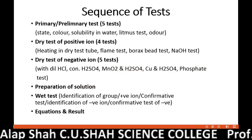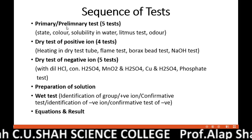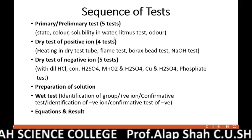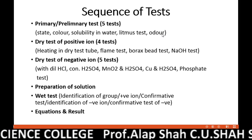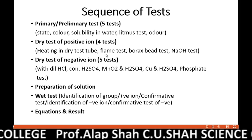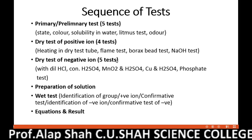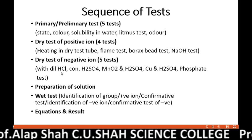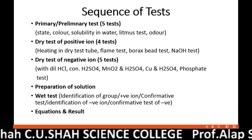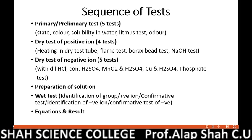This is the sequence of tests. Whenever you are given solid powder, you will always start with the primary or preliminary test. There are five tests in it: state, color, solubility in water, litmus test, and odor or smell. Dry test of positive ion has four tests: heating in the dry test tube, flame test, borax bead test, and NaOH test. Dry test of negative ion has five tests: test with diluted HCl, test with concentrated sulfuric acid, test with manganese dioxide and sulfuric acid, test with copper foil and sulfuric acid, and the phosphate test. This portion is new for you.